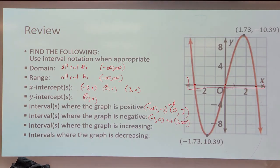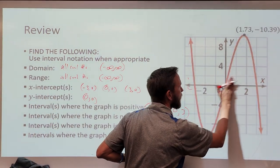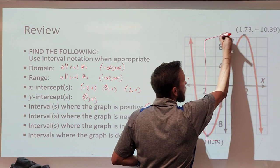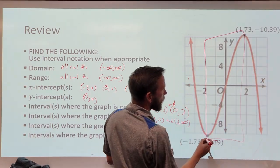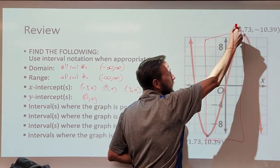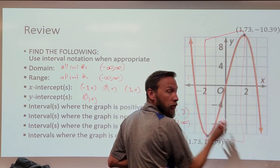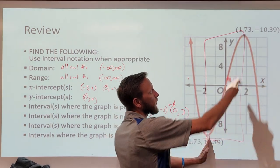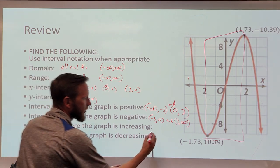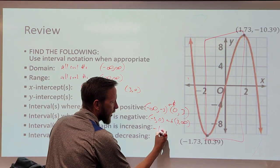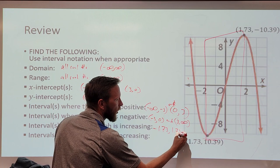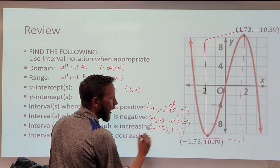Where is the graph increasing? If you were tracing this from left to right, you would go down, down, down, then up, up, up, then down, down, down. So where did you go up? You went up from this minimum to that maximum — from x equals negative 1.73 to x equals positive 1.73, exclusive.